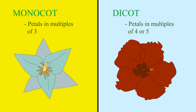There is also a difference between the flowers of the plants in each group. Monocot flowers will usually form with petals in multiples of three, while dicot flowers will have petals in multiples of four or five.